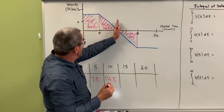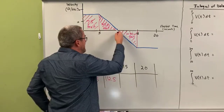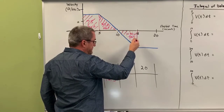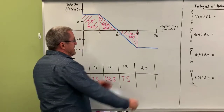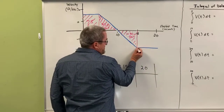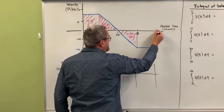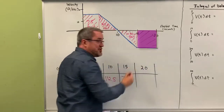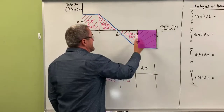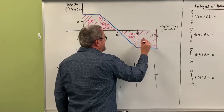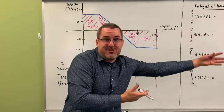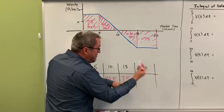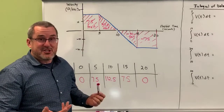So the train traveled 112.5 feet towards the station, stopped, and then traveled 37.5 feet away from the station, putting it back to 75 feet from its original position. For this last five seconds, from 15 to 20 seconds, the train is at full speed again at 15 feet per second in the opposite direction. The area of this rectangle is a visual geometric representation of the distance traveled — 15 feet per second for five seconds is 75 feet, but since it's a negative velocity, it's negative 75 feet. If it was at 75 feet and went back 75 feet, it's now back to its original position.